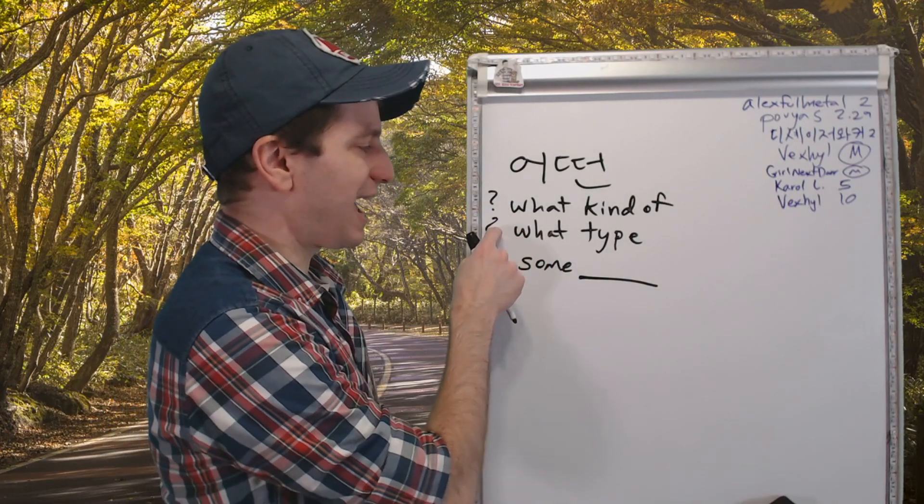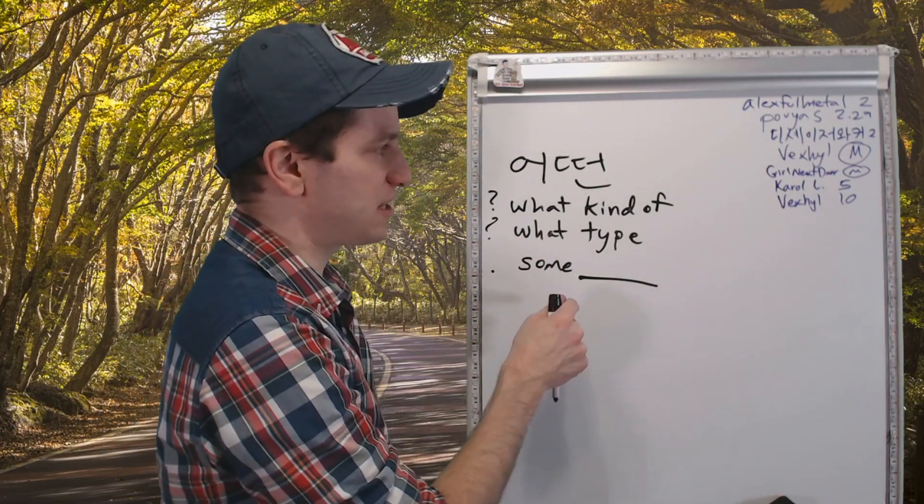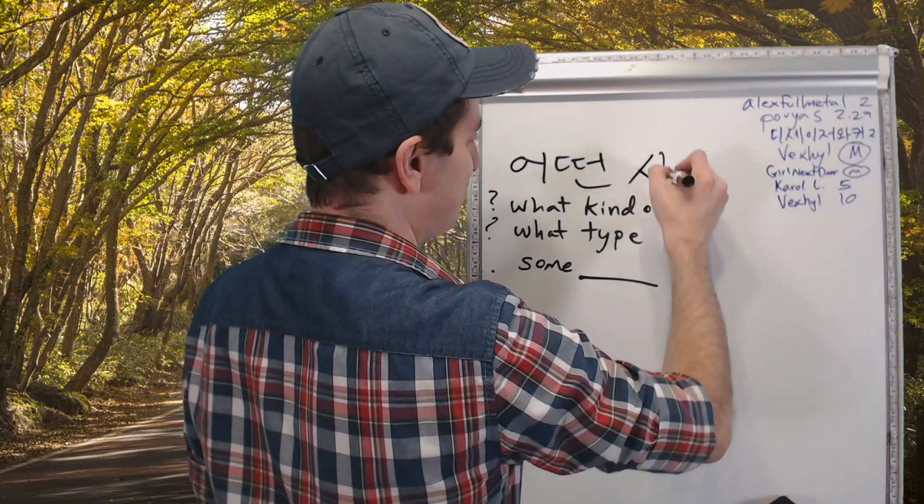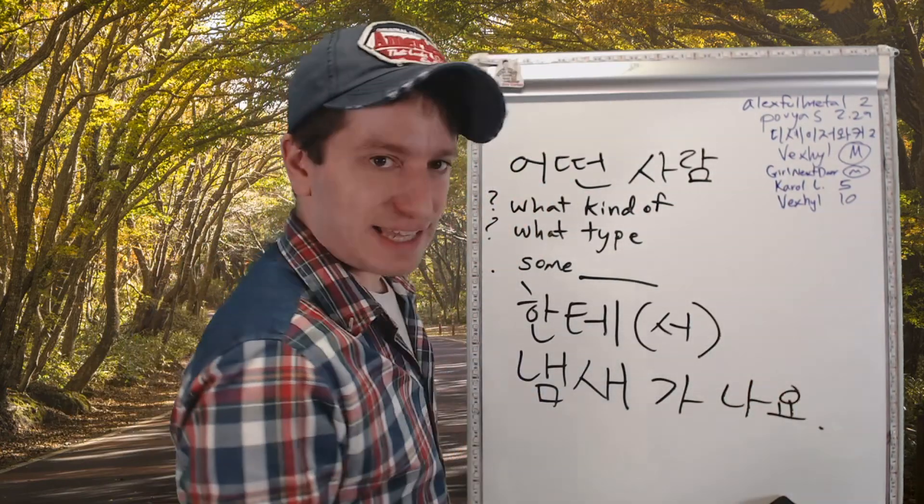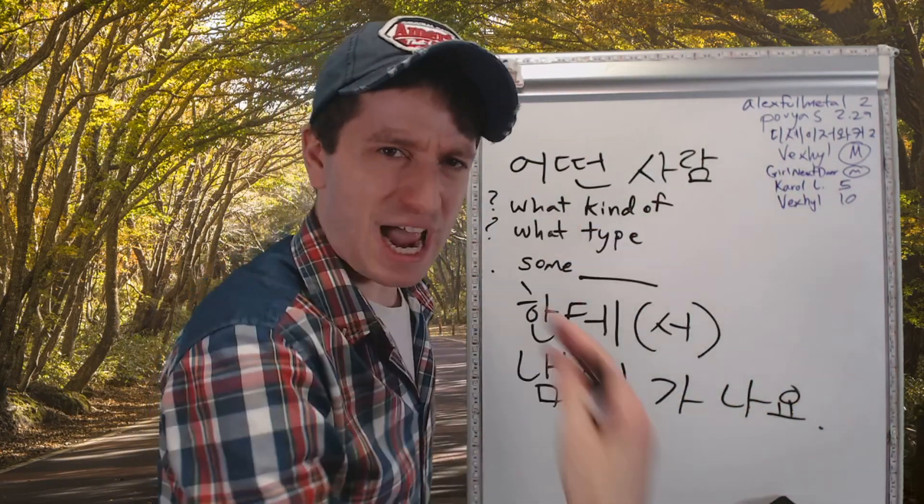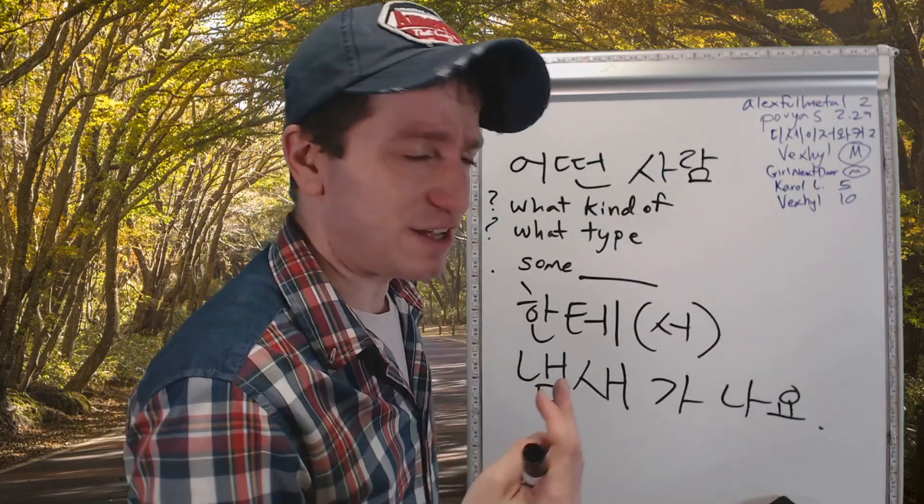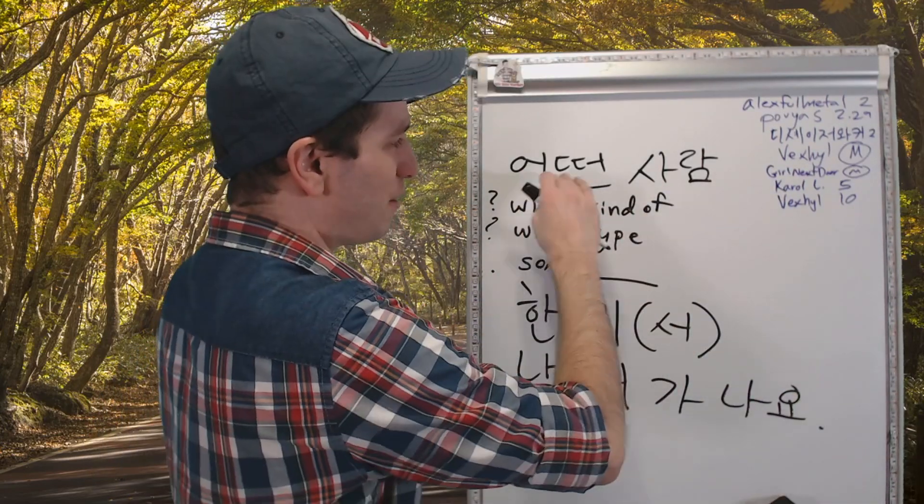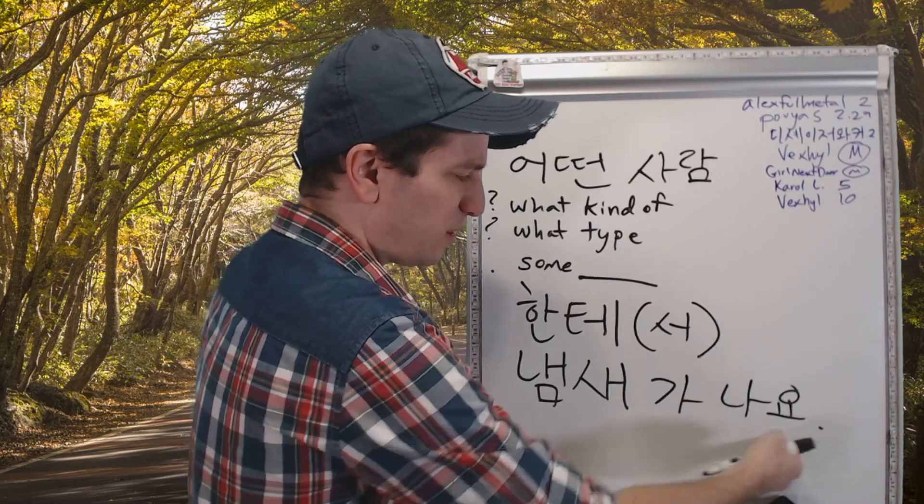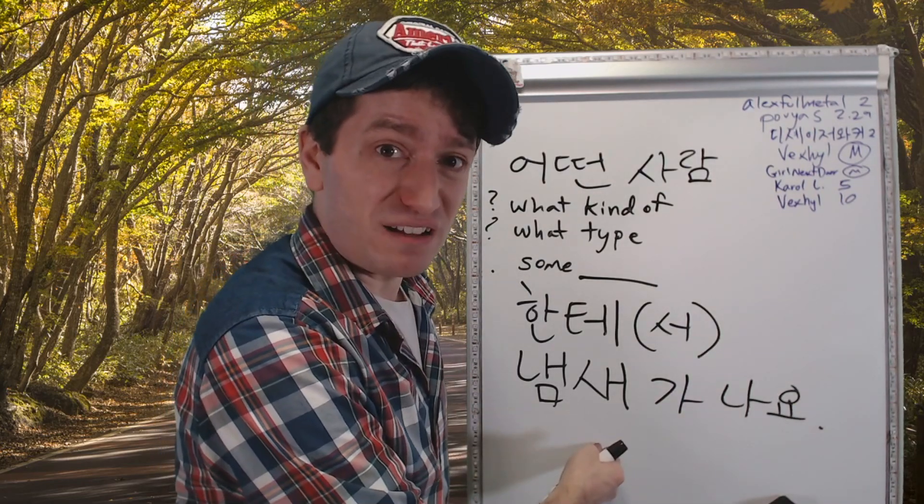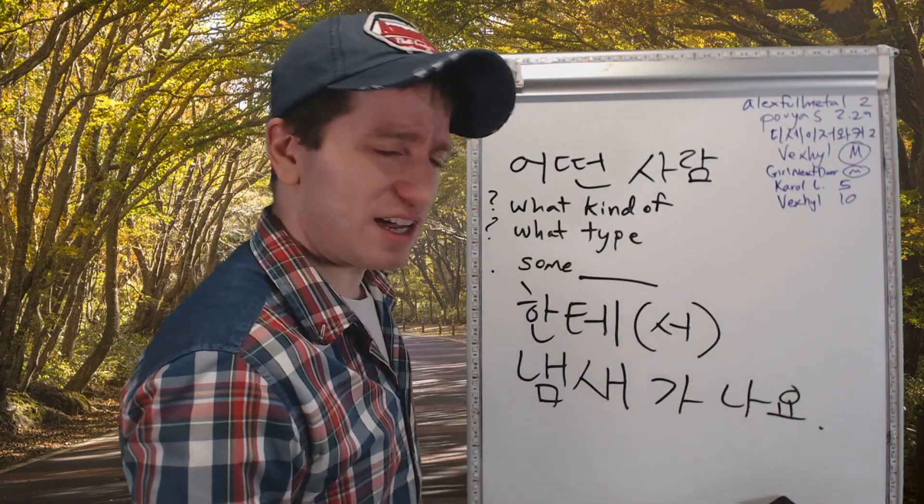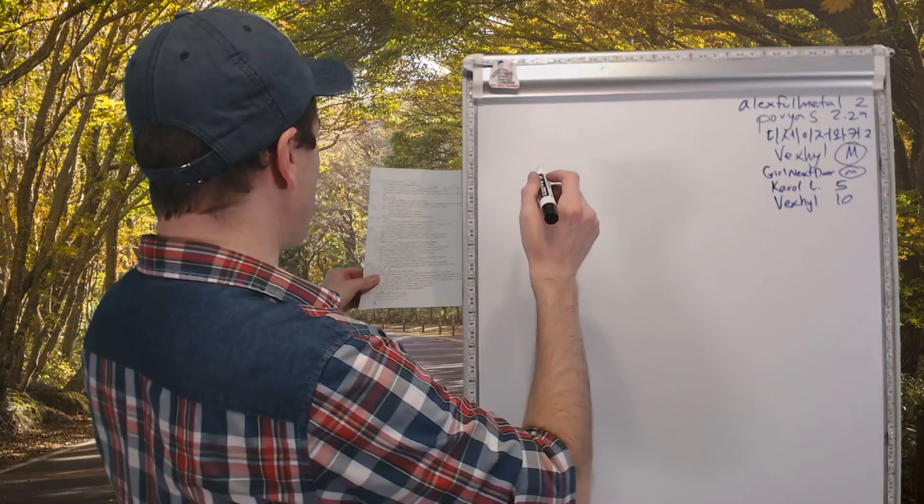어떤. If it's in a question, it means what kind of. If it's not in a question, it just means some. So here we have 어떤 사람한테. 냄새가 나다 means literally a smell comes out. So someone smells. 어떤 사람한테, from some person, when a smell comes out. Someone here smells. 어떤 사람한테 냄새가 나요. Now let's go on.